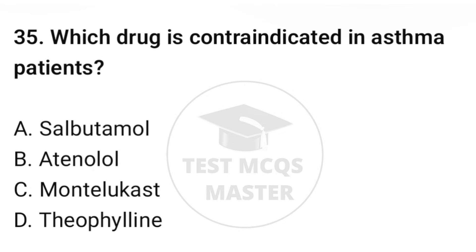Question number thirty-five: which drug is contraindicated in asthma? The correct option is B: Atenolol.